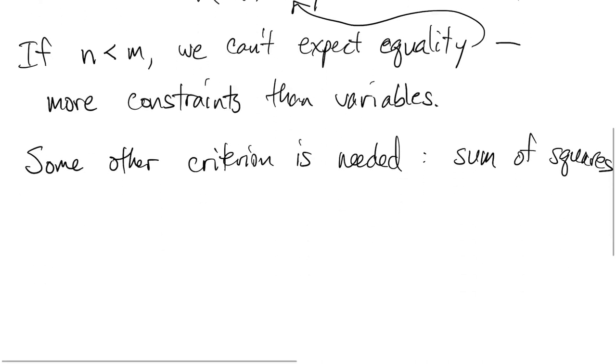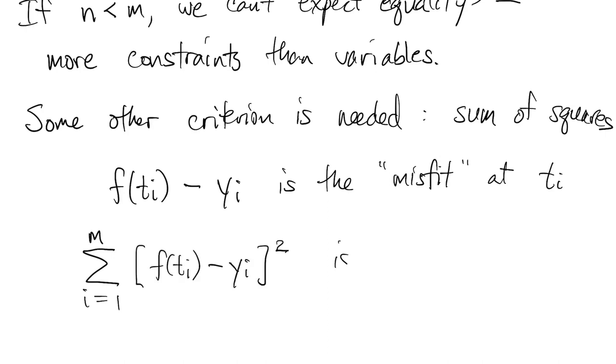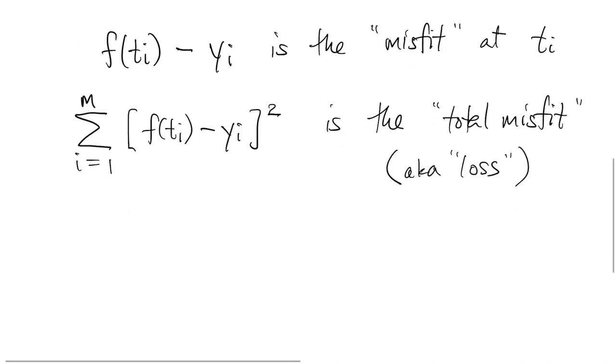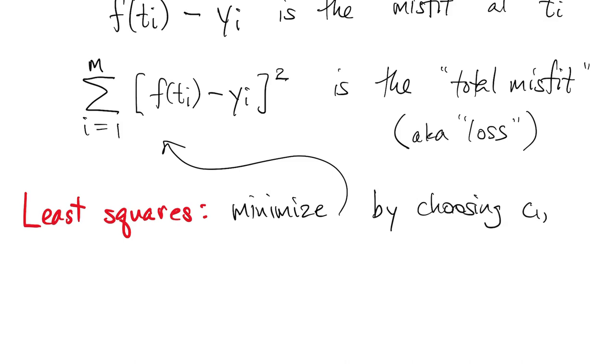And the most common choice is to use the sum of squares. So let's take the difference between f and data value as the misfit at one of the points. And then we will square those and add them up over all the points. And we'll call that the total misfit. In machine learning, this would be called the loss. So since this is a sum of squares of errors, then minimizing it is what we call least squares. We minimize this total misfit over all choices of the coefficients in the polynomial.